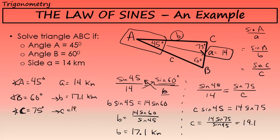In this problem, our units for length are kilometers, so side c is 19.1 kilometers. In the box, I have solved triangle ABC.